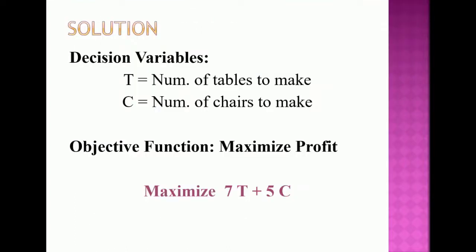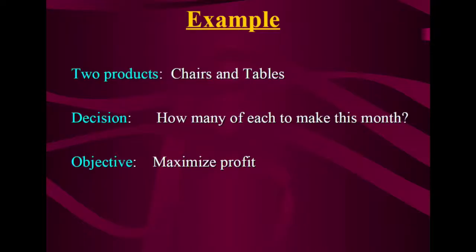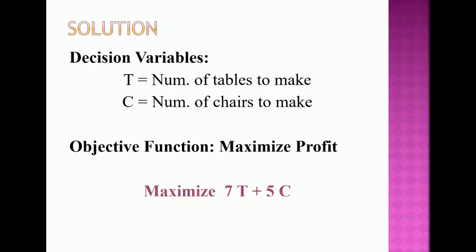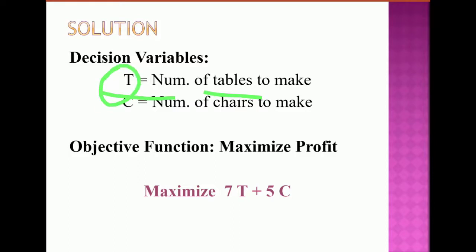The first step in the solution is to identify the decision variables. The major decision is how many of each product to make this month. Let T be the number of tables to be made — I chose T because it stands for tables. Let C be the number of chairs to be made.